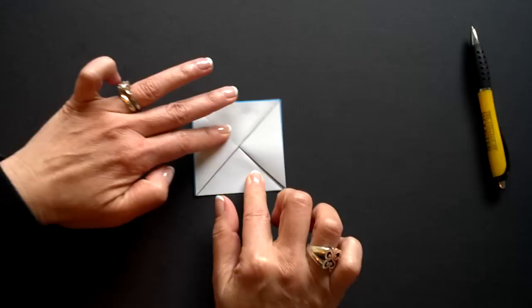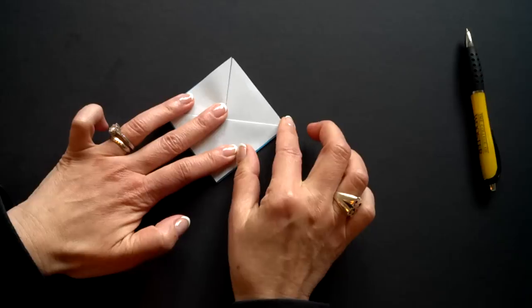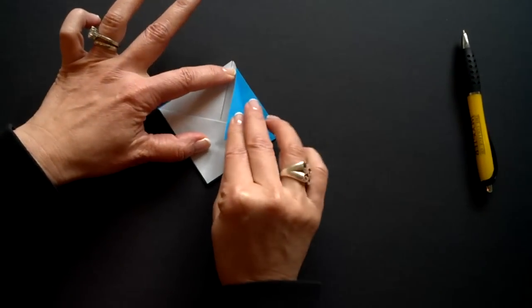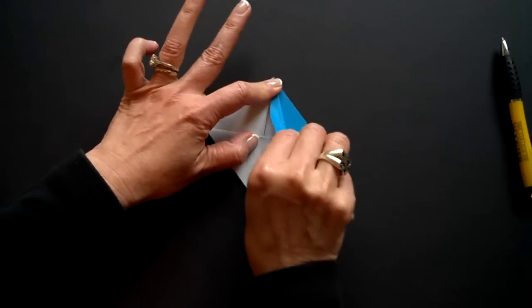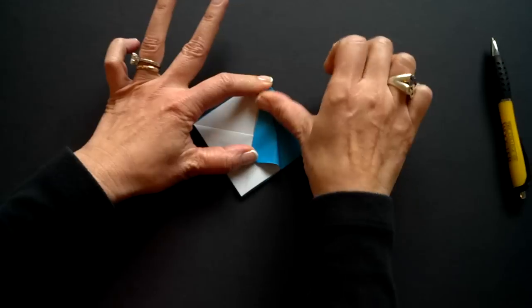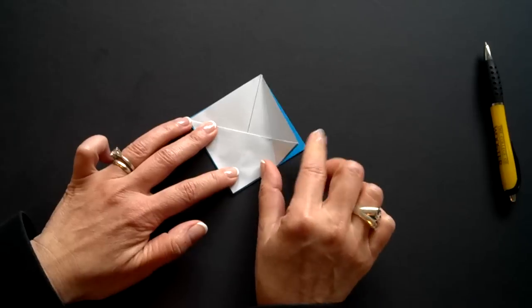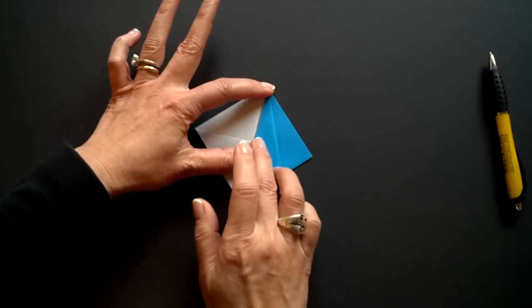I'm going to turn this around. And I'm going to fold this side down the center. Make a nice crease. So from here to here. I'm going to do this three more times.